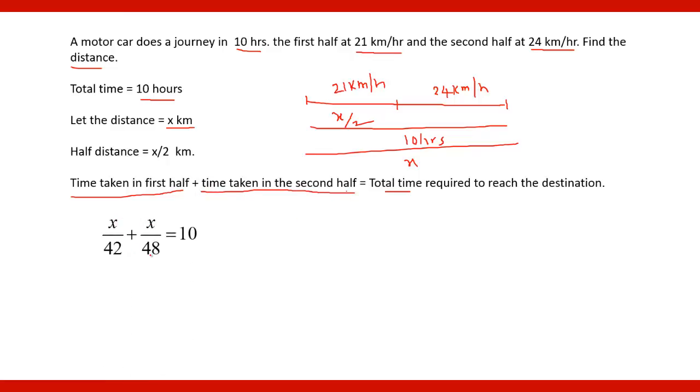Because this distance is x by 2, and the speed is 21 km per hour, therefore time equals distance upon speed. So distance is x by 2 upon speed is 21 km per hour. This will be x by 2 multiplied by 1 by 21, so it will be x by 42. Similarly in the other half part, you will get time equals x by 48.